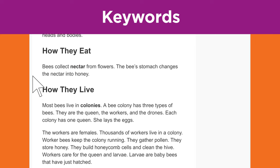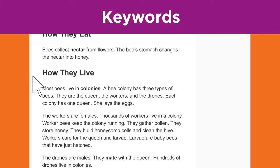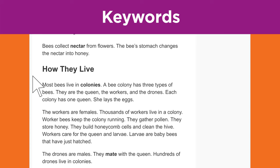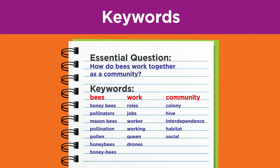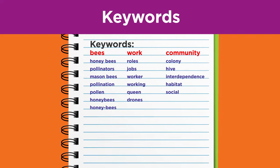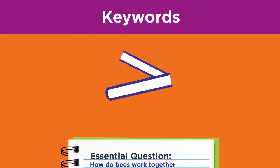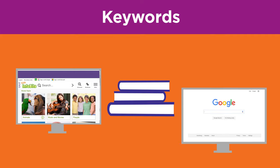On the other hand, from the section 'how they live,' we learn about three specific roles that bees have in a colony: queen, workers, and drones. These are excellent words to add to your keyword list. Whether you are searching a book, library database, or the internet, using keywords will help you find the best information about your topic.